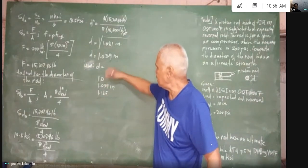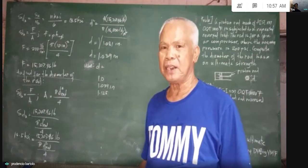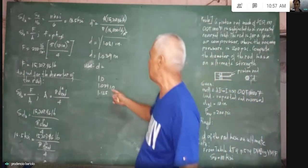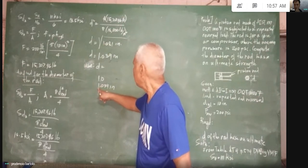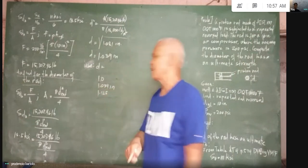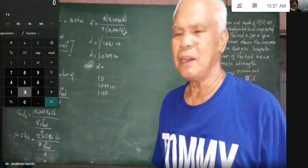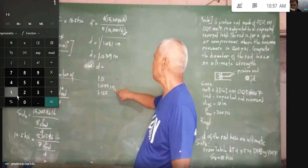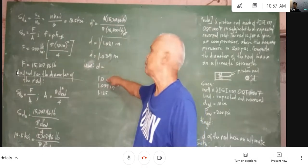The difference between the computed value and the lower value is 0.039. Moving the decimal three places to the right: 39 divided by 1,039. By inspection, we can see that is lower than 4%. Since it is lower than 4%, the diameter of the piston rod we use is the lower value, which is 1 inch.